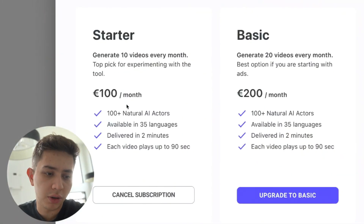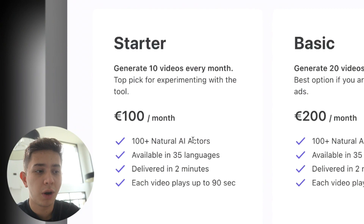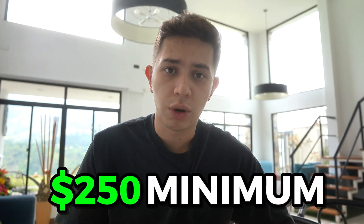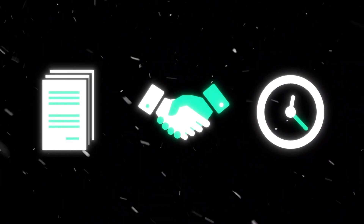There are three different prices: 100 euro, 200 euro, and a pro tier where you can negotiate and have a custom number of videos. With the starter plan, you can do 10 videos every single month. When you're hiring a UGC creator, you're looking at least $250 minimum to work with them, and you have to do the scripting and deal with delays and all that. From a monetary perspective, you're doing 10 videos for 100 euros. Now I want to show you how good these videos actually are, so let's get into it.